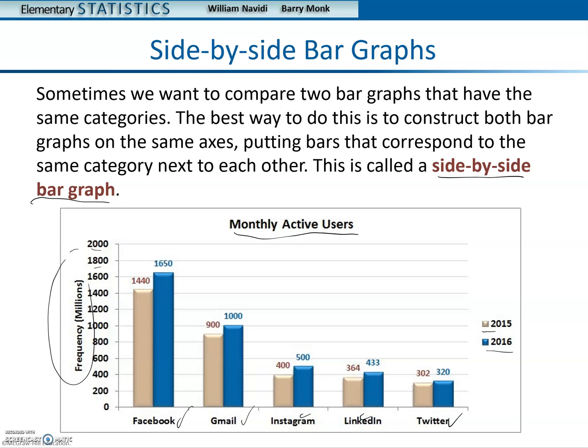This is in frequency, in millions. So every one of these numbers is millions: 200 million, 400 million, 600 million. And notice that we're running them side-by-side. So we have 2015 data for Facebook, 2016 data. So as you can see, you can quickly compare from year to year for each of the categories.